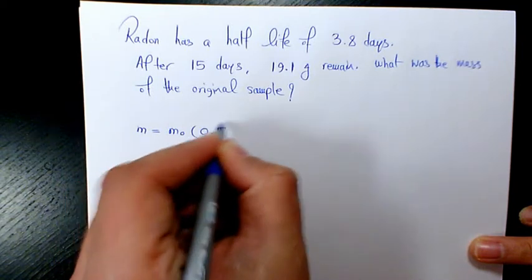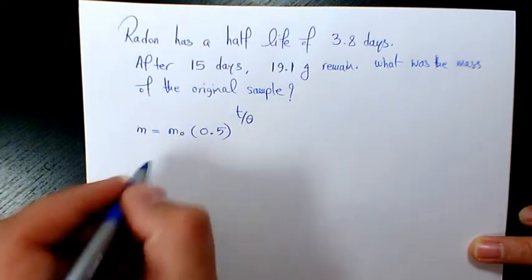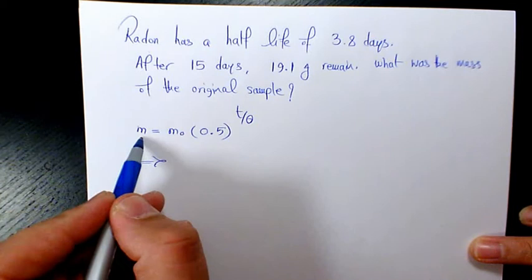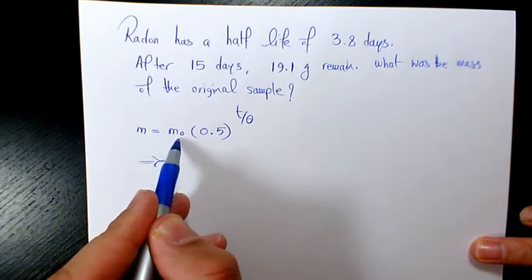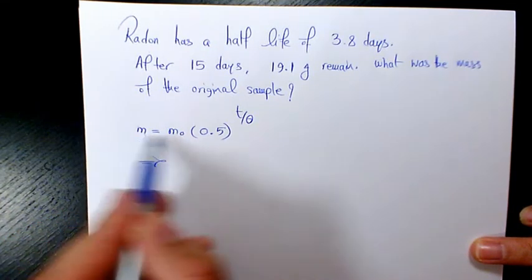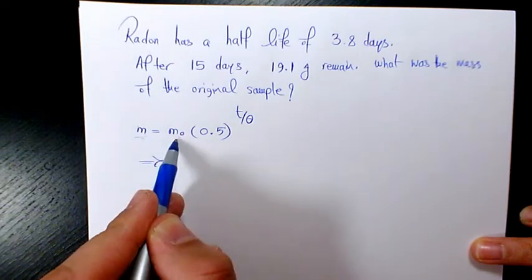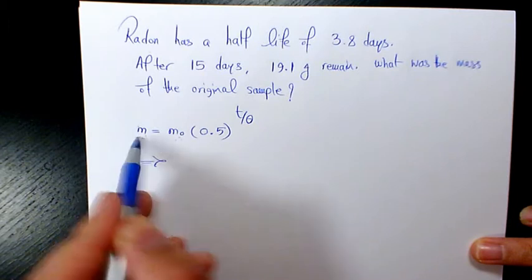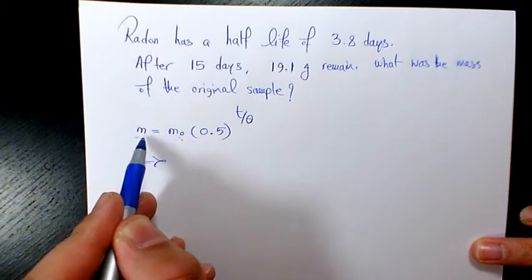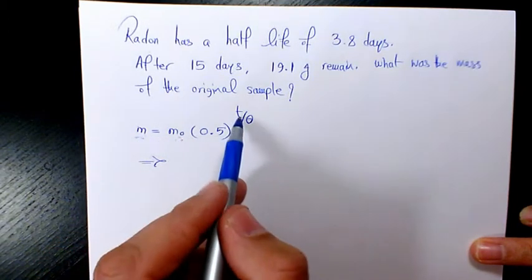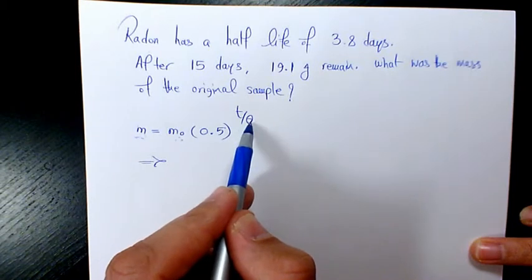m is the remaining mass, m₀ is the initial mass. Both of them have to have the same unit. If m is grams, m₀ has to be grams. If this one is milligrams, this one has to be milligrams. Kilograms, kilograms. t is time and θ is the half-life.